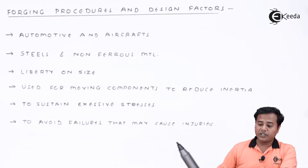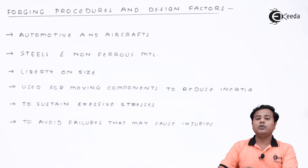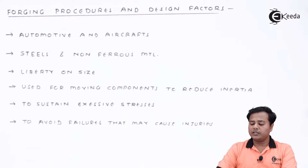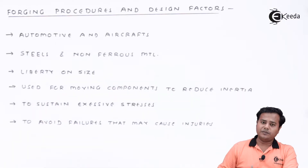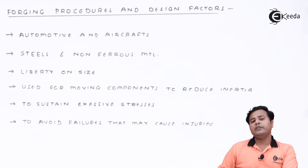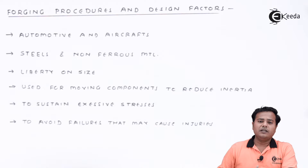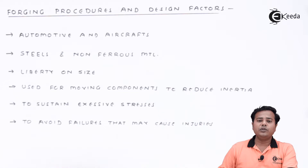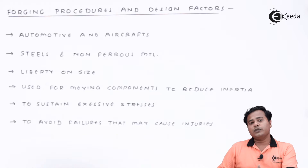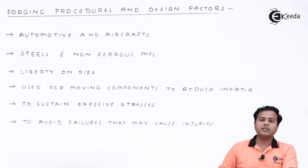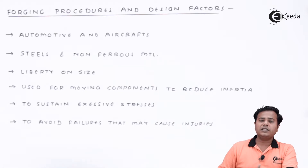The very first thing to mention is that forging procedures are used for components and parts used in automotive and aircraft, because those components are constantly mobile. All such components may undergo heavy stresses, which may lead to very heavy failure. Due to the significance of forging procedures, we must consider forging for all those components so that they will be safe enough in operation.